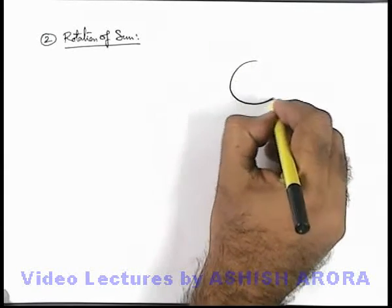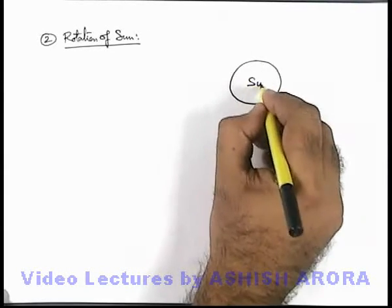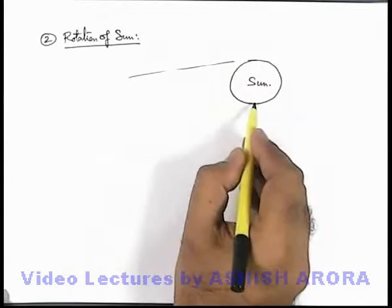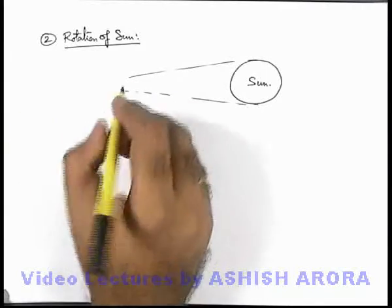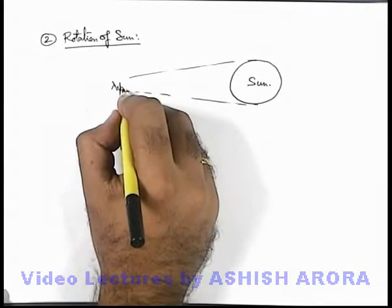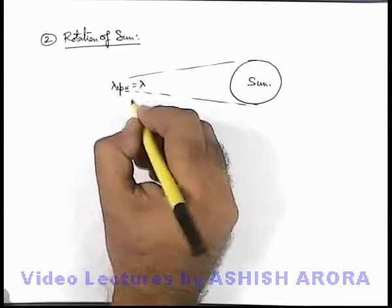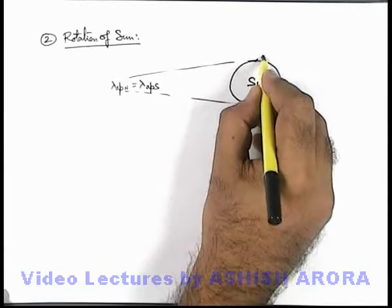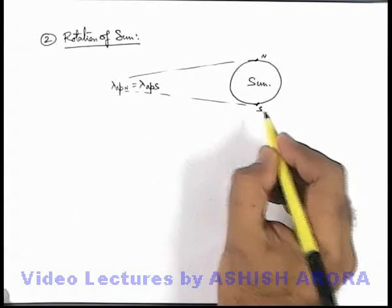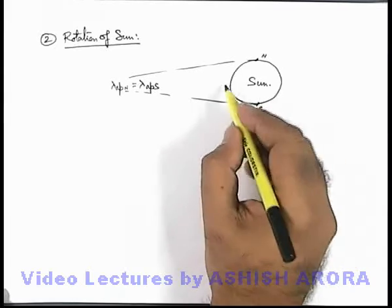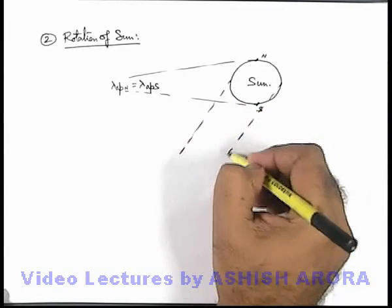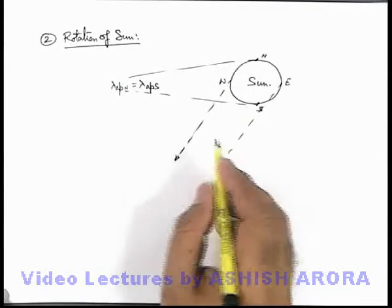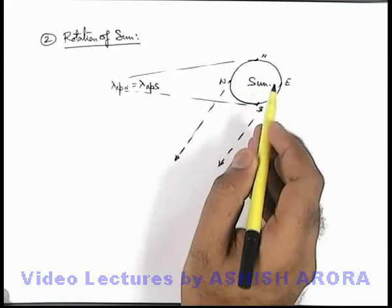For detection of this, say this is the sun. On earth we analyze the radiation coming from the north and south edge of the sun. It is observed that lambda apparent which is approaching from the north edge is exactly equal to the lambda apparent which is approaching from the south edge. That means this north edge and south edge are having almost identical speeds. And when the east and west edges are analyzed, or the radiation from east and west edges of the sun are analyzed.